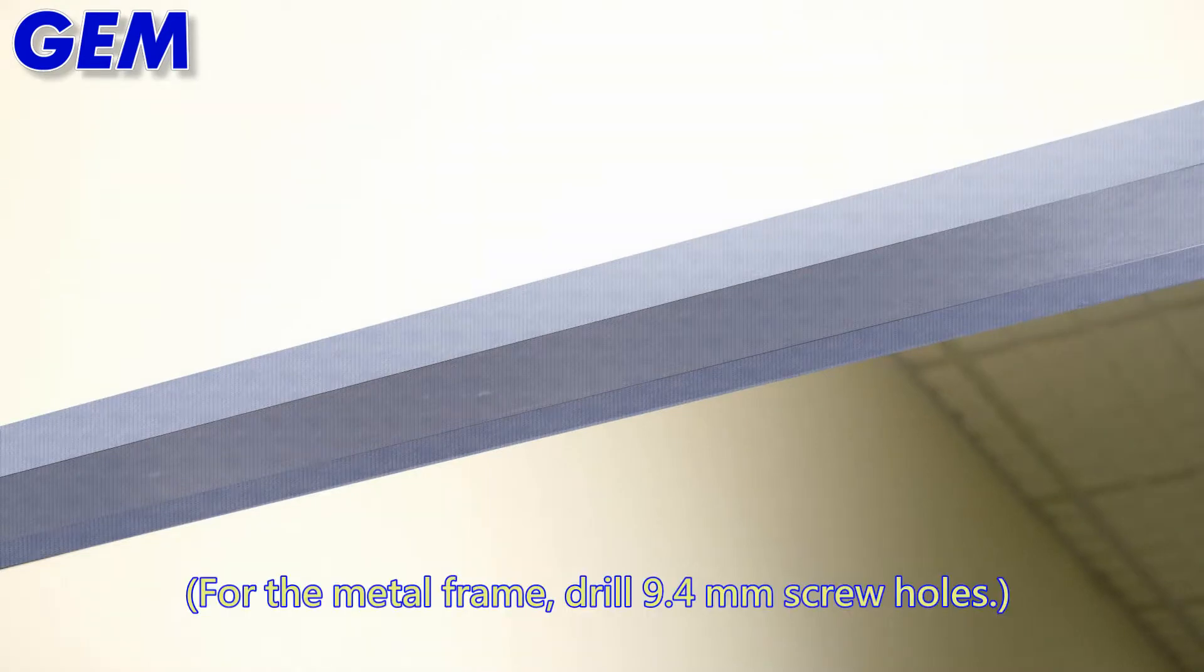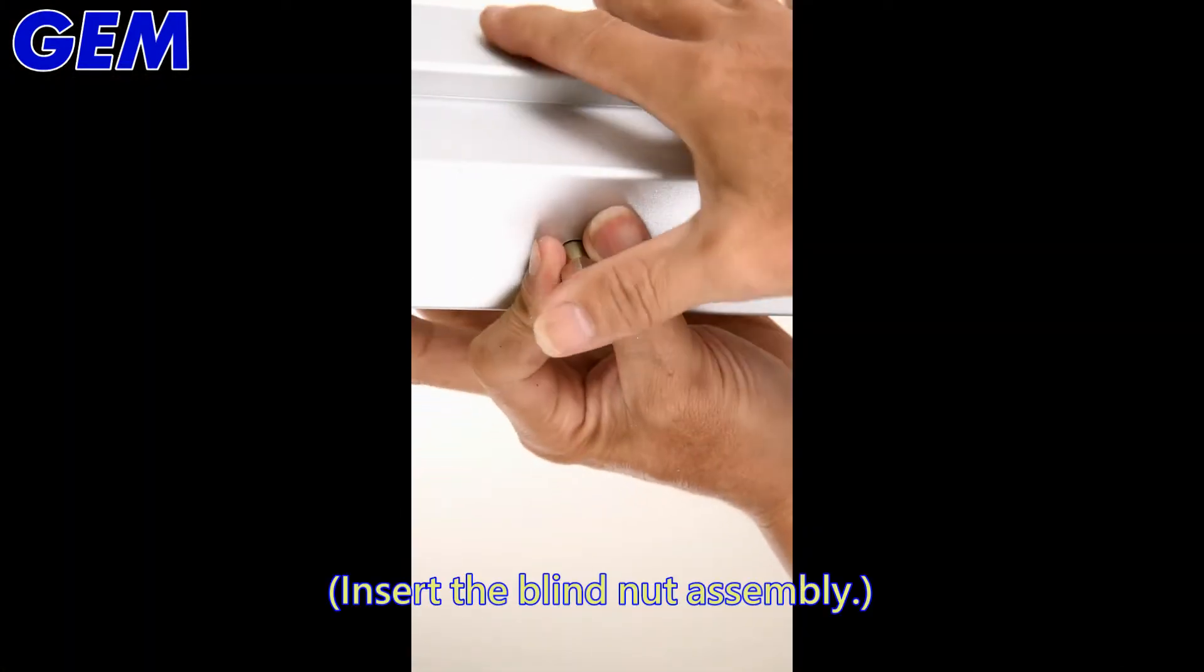For the metal frame, drill 9.4mm screw holes. Insert the blind knot assembly.